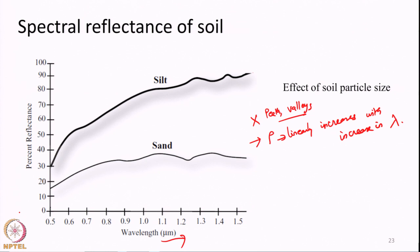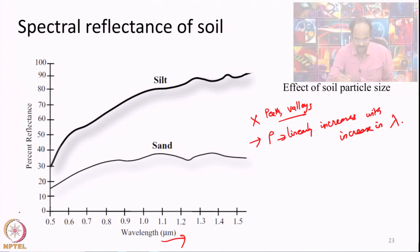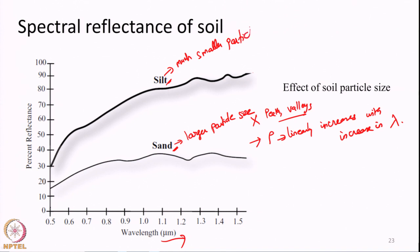In general, the reflectance of soil will increase when the particle size decreases. For example, we have two reflectance curves plotted here — one for sand and another for silt. Sand has larger particle sizes while silt has much smaller particle sizes. In general, soils with finer or smaller particle size will have a higher reflectance than soils with larger particle size.